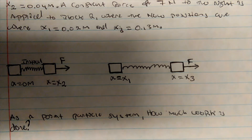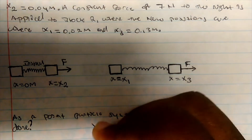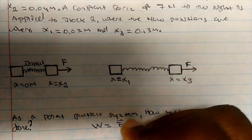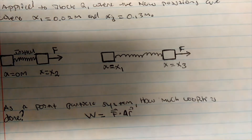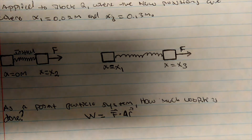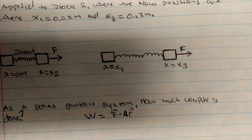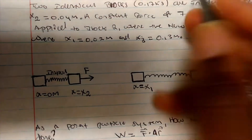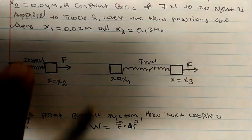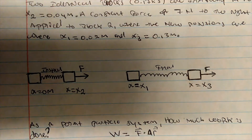This is where it becomes very important, and I can explain the difference. We know the generic formula for work: work is equal to force dotted into the change in displacement. But what is the displacement? As a point particle system, we talk about the change in displacement of the center of mass — that's the only thing we care about. The change in displacement is always final minus initial, but displacement of what? It's the displacement of the center of mass.